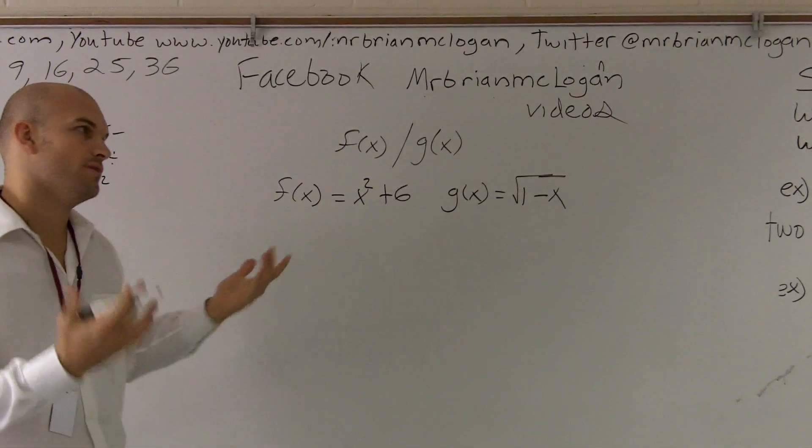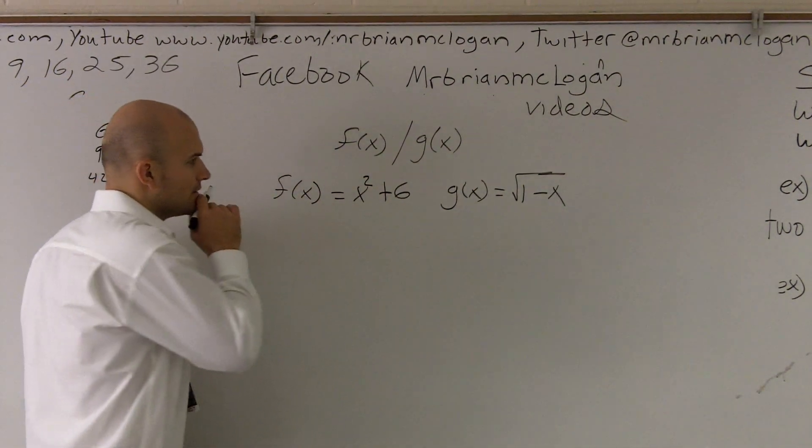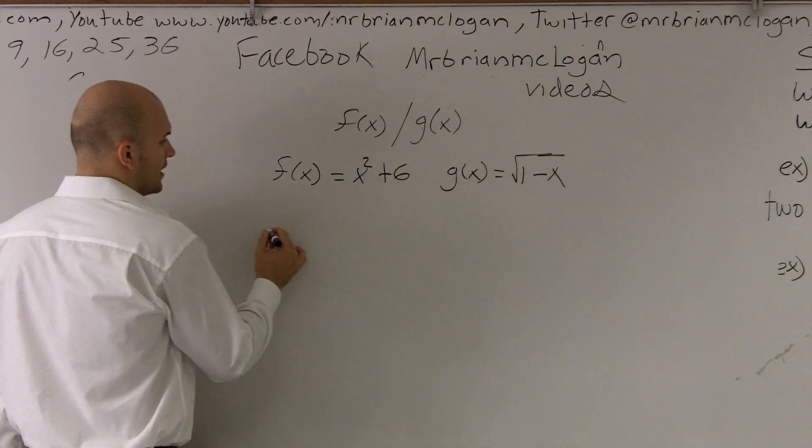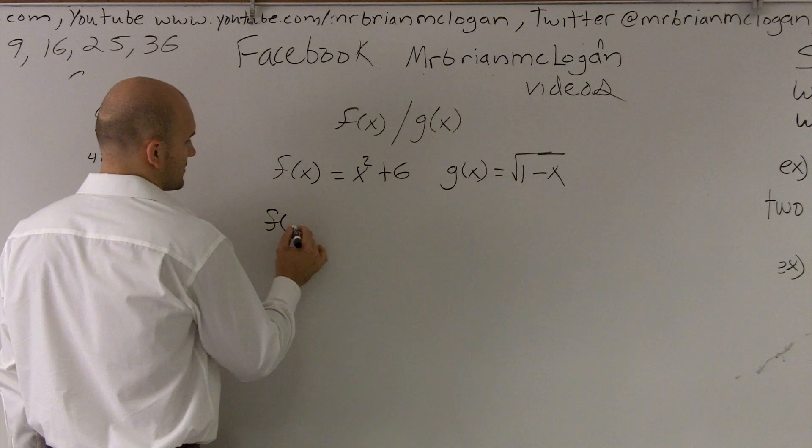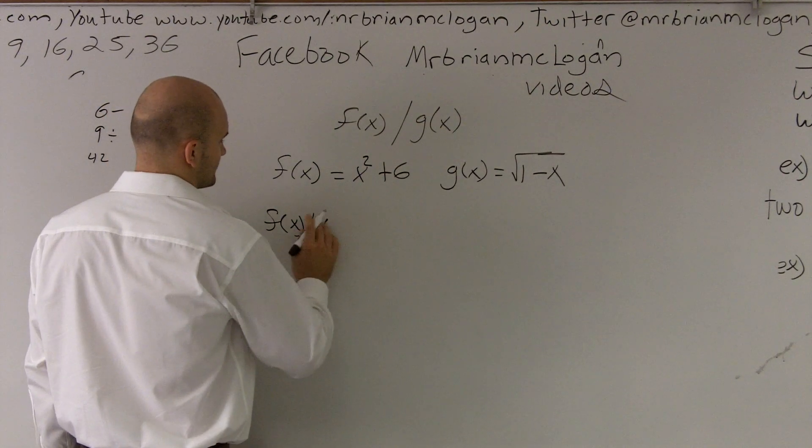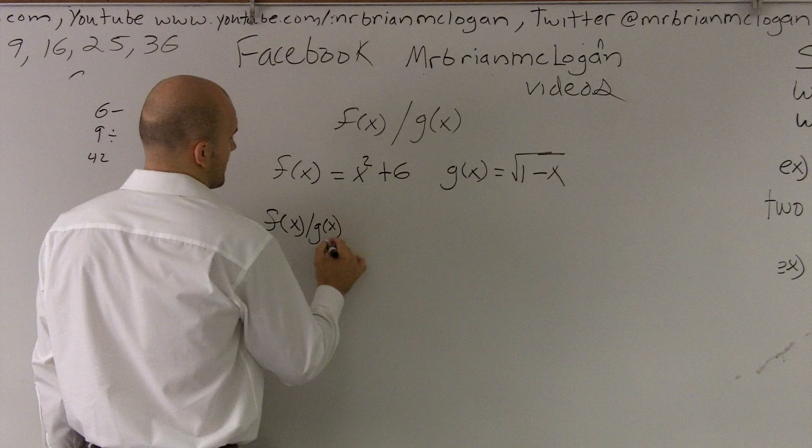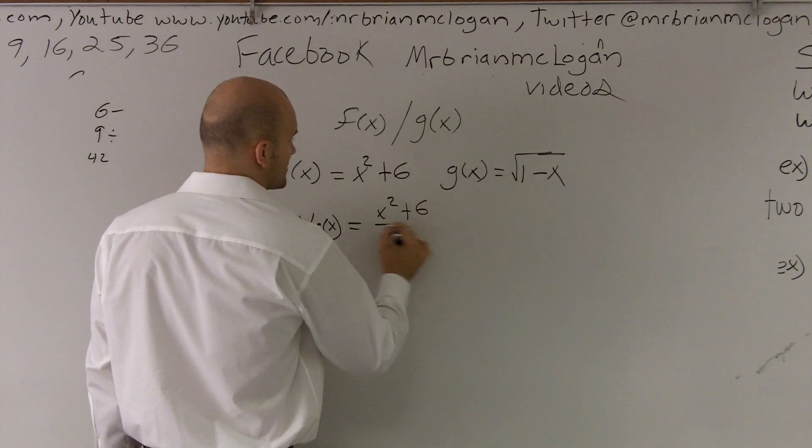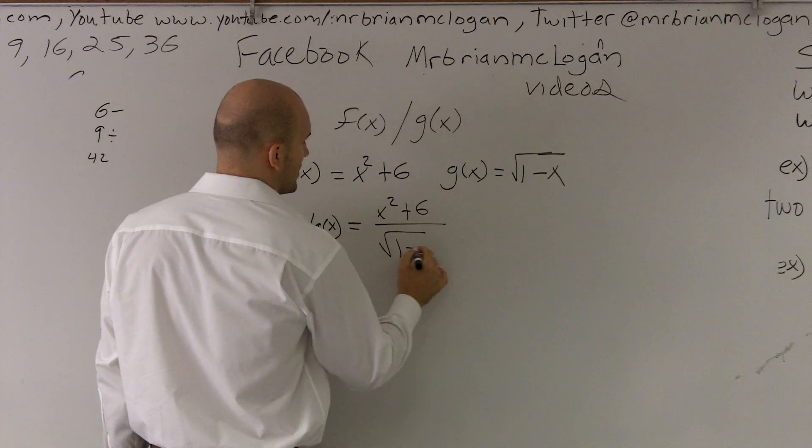So what we need to do is put one over the other, divide them. And when they divide, they also are asking us to find what the domain is. So f(x) divided by g(x), that's going to give me x squared plus 6 over the square root of 1 minus x.